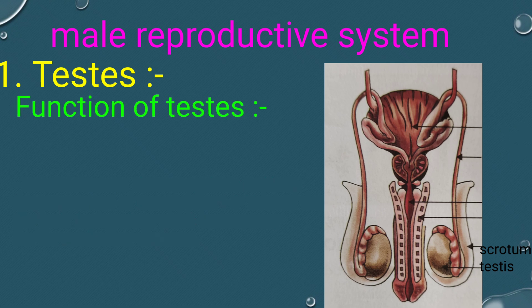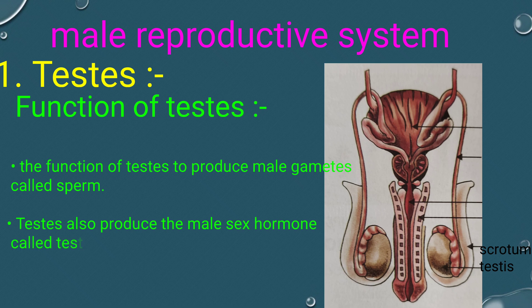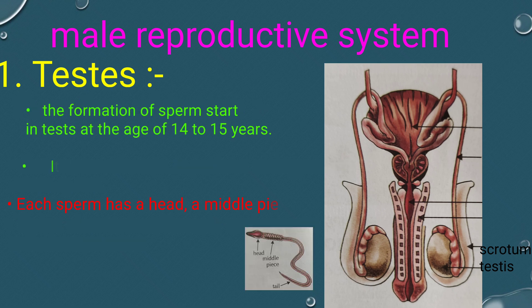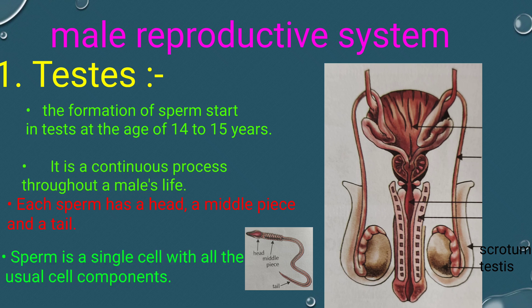Function of testes: The function of the testes is to produce male gametes called sperm. The testes also produce the male sex hormone called testosterone. The formation of sperm starts in the testes at the age of 14 to 15 years, and it is a continuous process throughout the life.